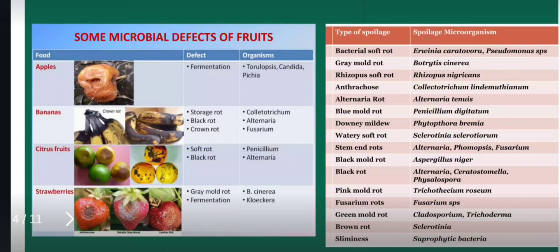For example, bacterial soft rot is caused by Erwinia species, Pseudomonas species; gray mold rot is caused by Botrytis species; Rhizopus soft rot caused by Rhizopus species; downy mildew caused by Phytophthora species; blue mold rot caused by Penicillium species. Like this, there are numerous microbial pathogens which attack fruits and try to contaminate them.